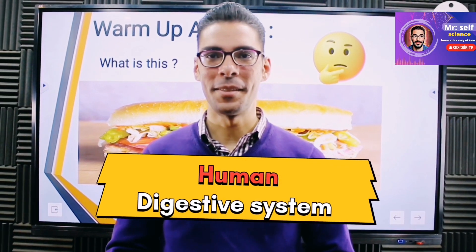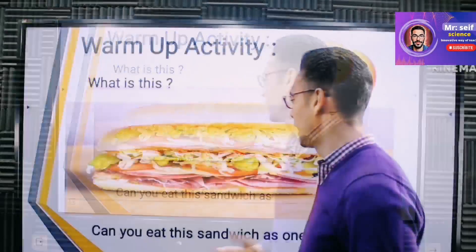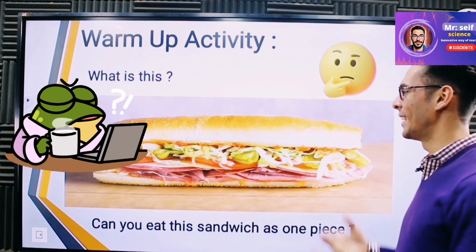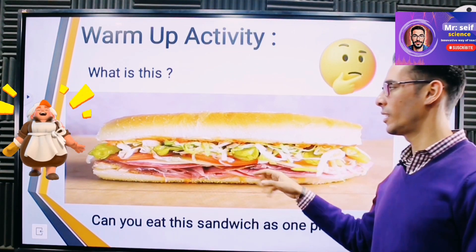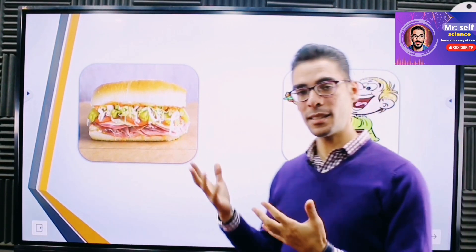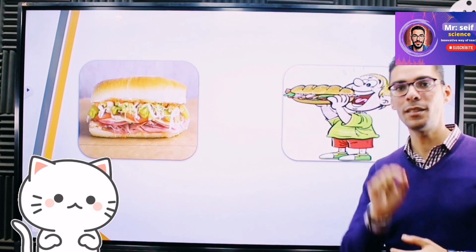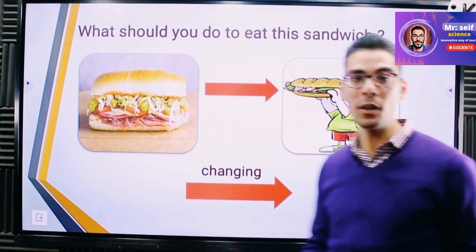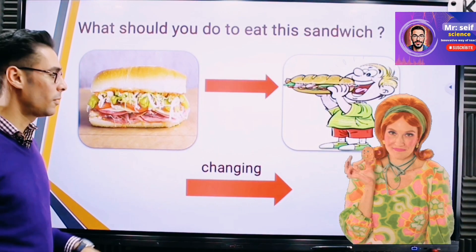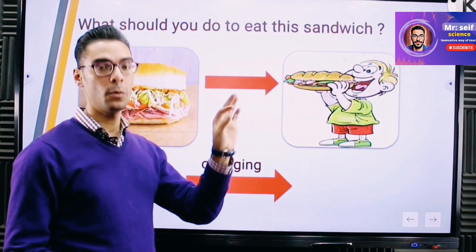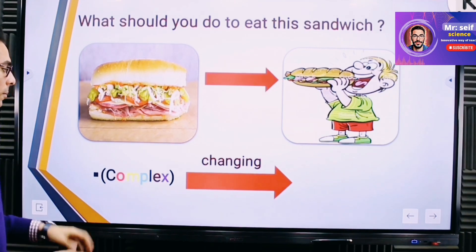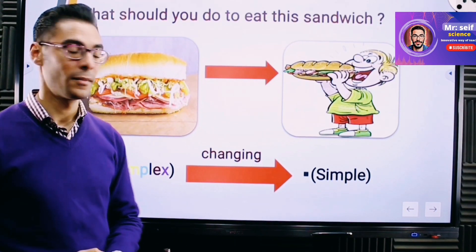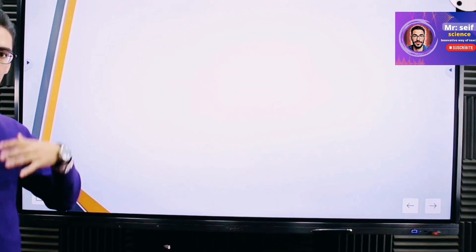Today we're going to be talking about the digestive system, but before we get started I have a question for you: can you eat this sandwich as just one piece like this? It seems like it's not a hard question — definitely no — but I need to ask you why. You cannot eat the sandwich as just one piece because the sandwich is so big and your mouth is so small. So what do you do if you want to eat the sandwich? Simple — change the sandwich from this form into smaller forms, from complex form, which means big, into simple form, which means small.